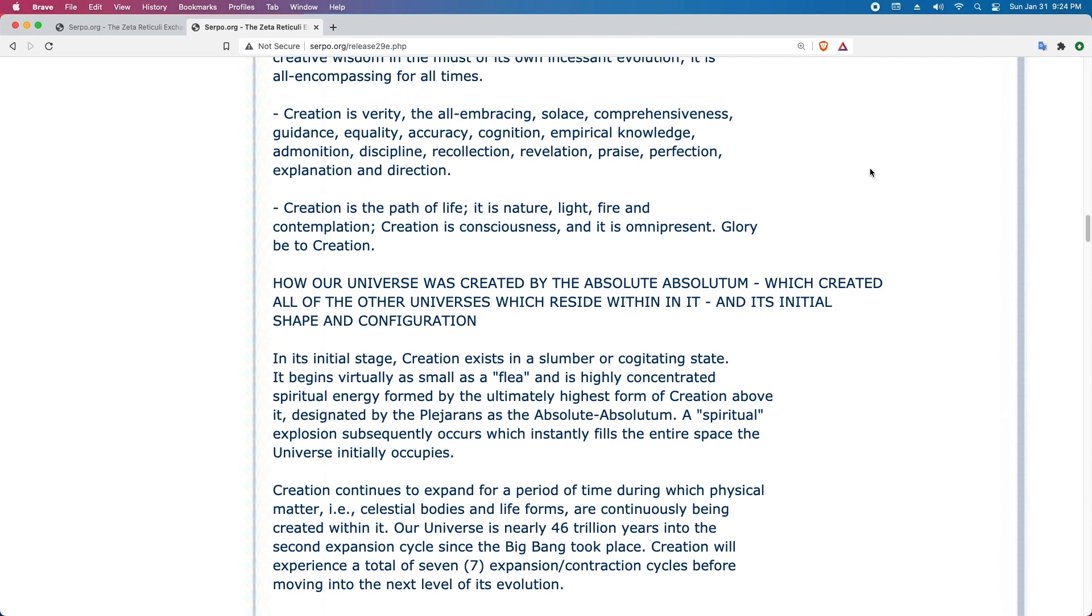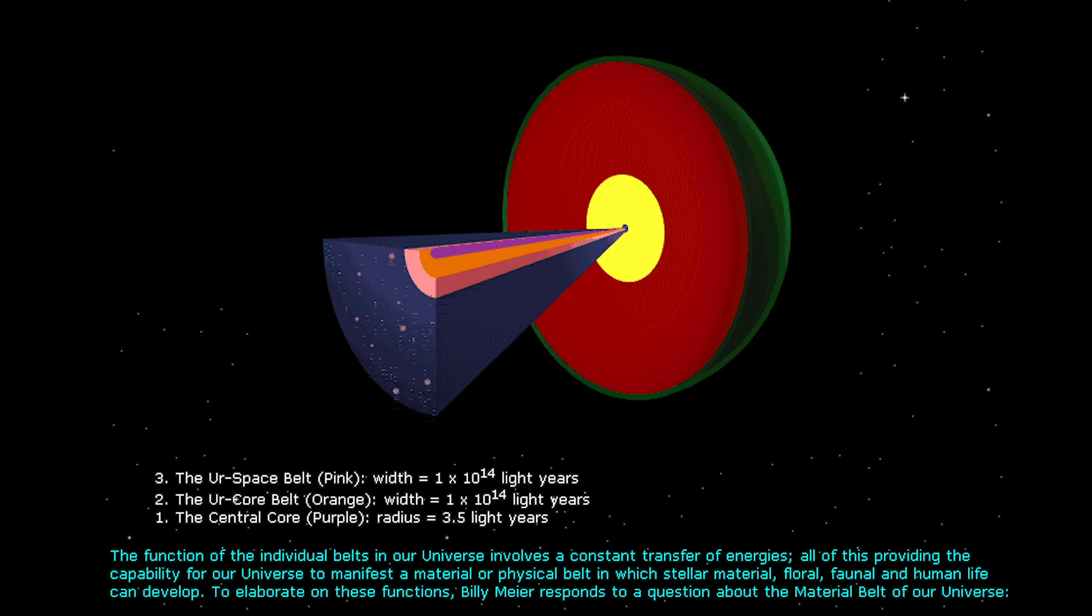Creation continues to expand for a period of time during which physical matter, for example, celestial bodies and life forms are continuously being created within it. Our universe is nearly 46 trillion years into the second expansion cycle since the Big Bang took place. Creation will experience a total of seven expansion-contraction cycles before moving into the next level of its evolution. A schematic of our universe: In order to grasp a better understanding of creation, it would be easier to depict it in a diagrammatic form. This, however, proves to be nearly impossible given the incredibly immense proportions of its components, namely its seven belts or levels of energy. However, an attempt is made to display a schematic in order to provide at least a hint of its enormous size. This link is no longer working. Is based on data present at the time just after the Big Bang, our universe has since expanded, reflecting much higher measurement values.